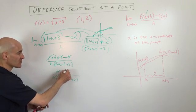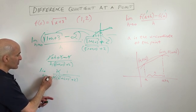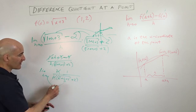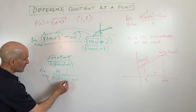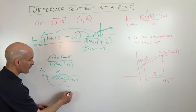The h's are going to cancel, so that's going to leave us with one. And then now, remember, this is the limit as h is approaching zero. If we put zero in place of h, what do we get? We get four, square root of four is two, plus two is four, so we get one fourth.